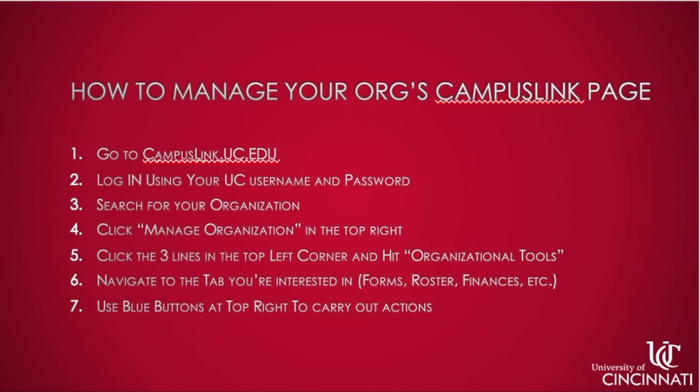Here's a quick guide on how to manage your organization's Campus Link page. First, go to campuslink.uc.edu and log in using your 6+2. Search for your organization and click Manage Organization in the top right. Click the three lines in the top left corner and hit Organizational Tools. Navigate to the tab you're interested in — for example, forms, roster, finances, etc. — and use the blue buttons to carry out actions.